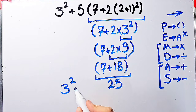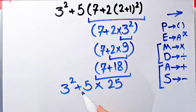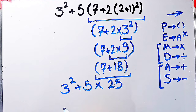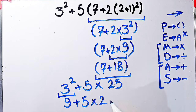Now the question is three to the power of two, plus five, then times twenty-five. Again we have exponent, addition, and multiplication. First we do this exponent: three to the power of two equals nine. Now we have nine plus five, then times twenty-five.